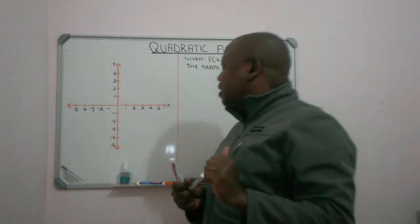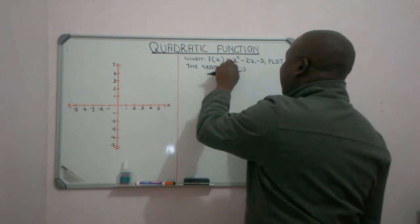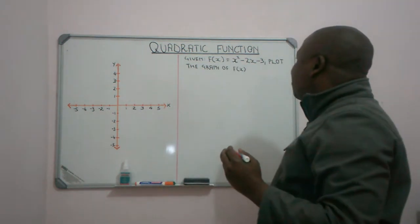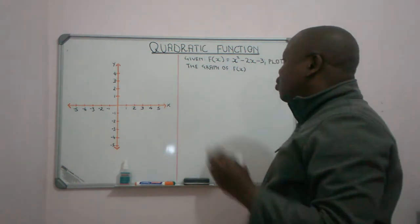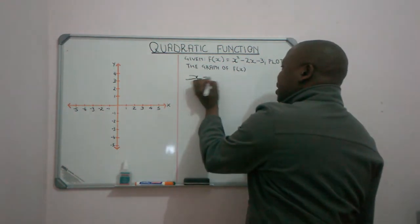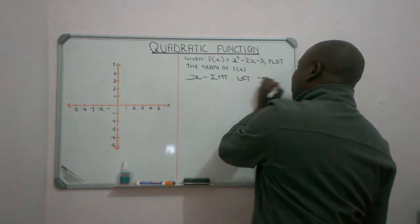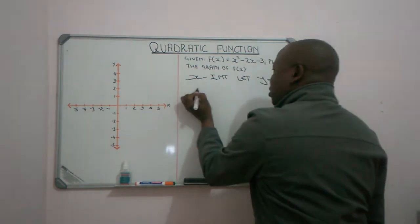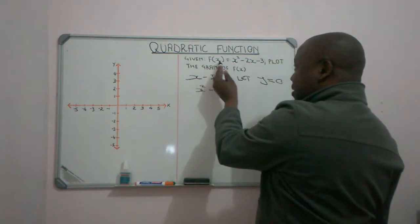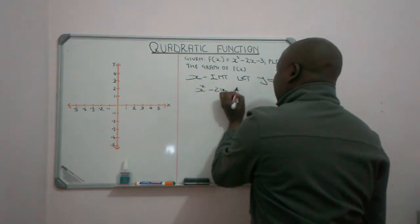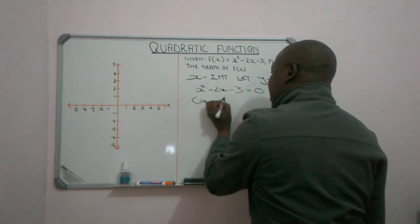So without any hesitation, let me start to plot my graph. The first thing that we are going to do is to find our x and y intercept. For the x intercept, we let y equal to 0. Meaning we are going to have x squared minus 2x minus 3 is equal to 0. Remember that f(x) is the same as y.